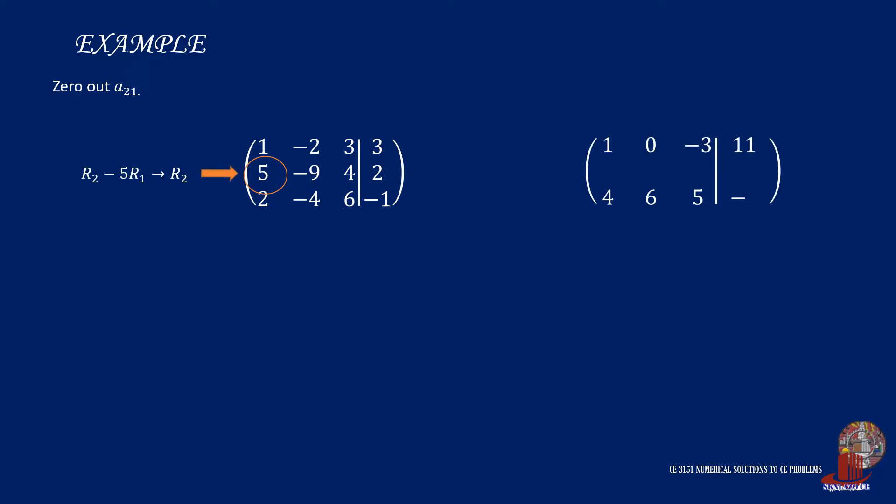We use row 2 minus 5 times row 1 as the new row 2. That gives 5 minus 5 times 1, making it 0 for element 2,1. The new element 2,2 is negative 9 minus 5 times negative 2, giving 1. Element 2,3 has 4 minus 5 of 3, yielding negative 11. The constant has 2 minus 5 times 3, which gives negative 13.